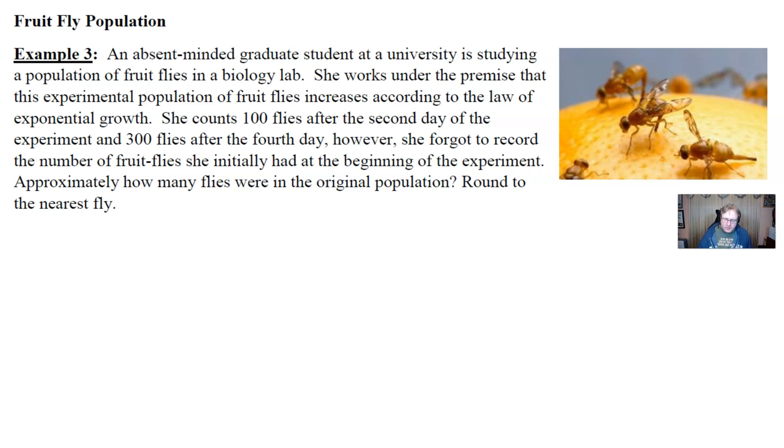Well, because we know that we're working under the premise that the fruit flies increase according to the law of exponential growth, that is just another phrase that says we can use our good friend y = Ce^(kt). Now, as I work through story problems, I like to substitute y out and use the amount of the item, in this case the number of flies at time t. So I have this as my jumping off point: A(t) = Ce^(kt).